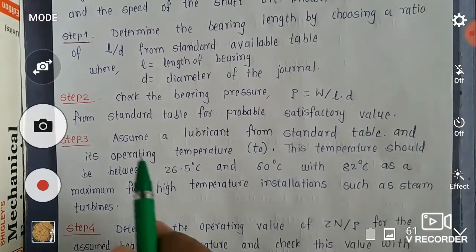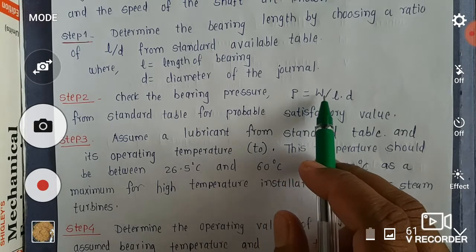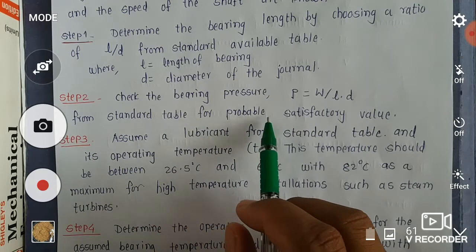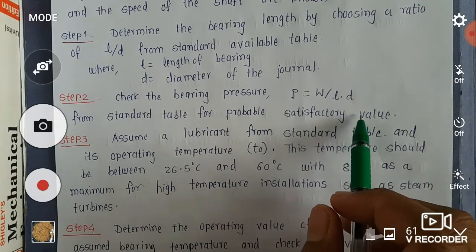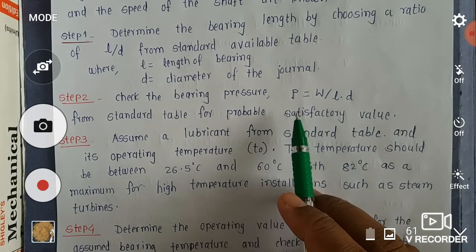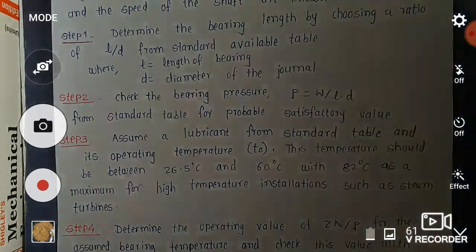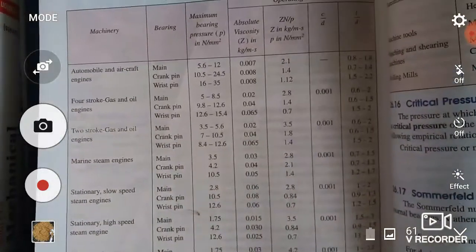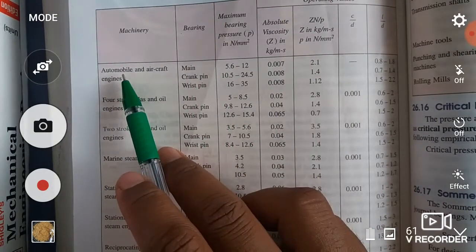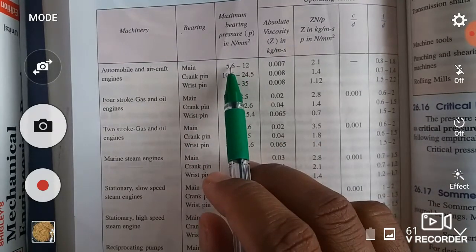Step 2: Check the bearing pressure, that is P equals W divided by L into D, from standard table for probable satisfactory value. This pressure is also checked again from the same table.